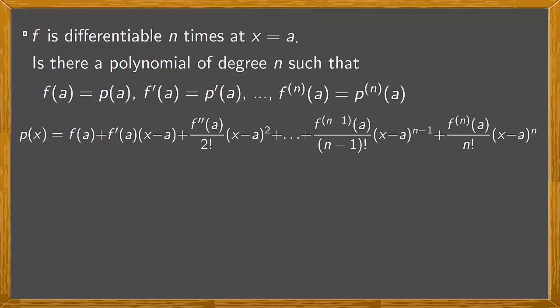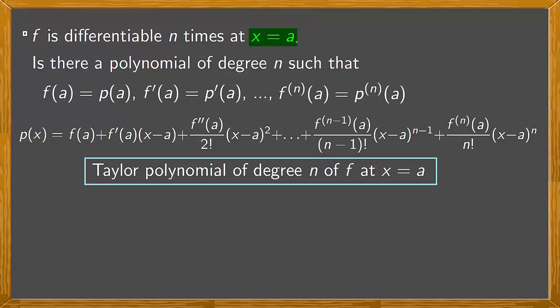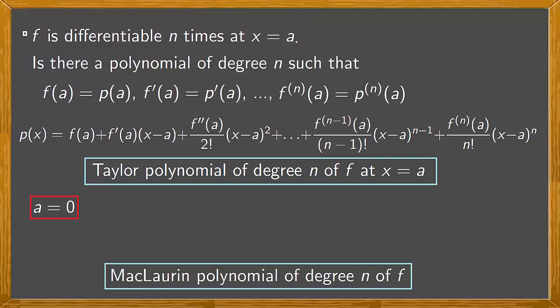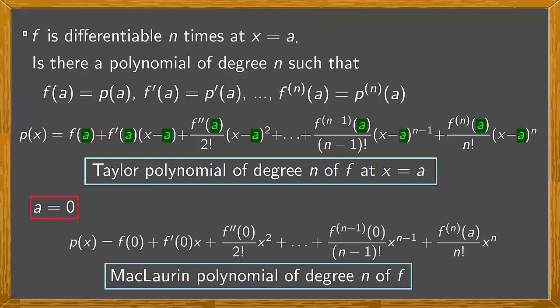One minor point: we say of degree n, but in truth it's of degree less than or equal to n. This polynomial is a good approximation to f near x equals a and we call it the Taylor polynomial of degree n of f at x equals a. Now in the particular case of a equals 0, the Taylor polynomial at x equals 0 is called the McLaren polynomial. For this case, substituting x equals 0 in the Taylor polynomial, we get the expression for the McLaren polynomial of degree n of f.